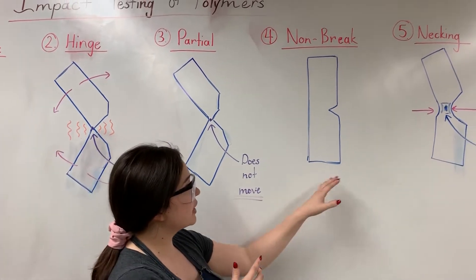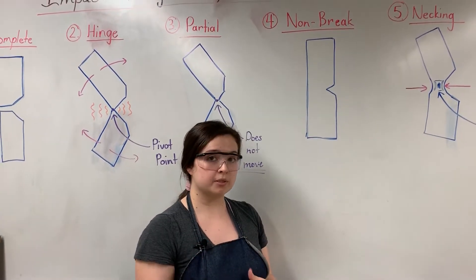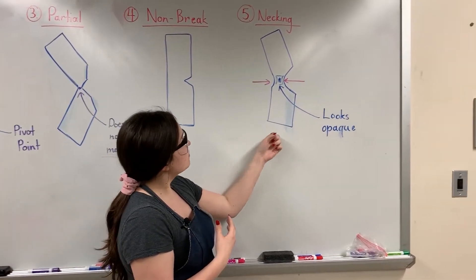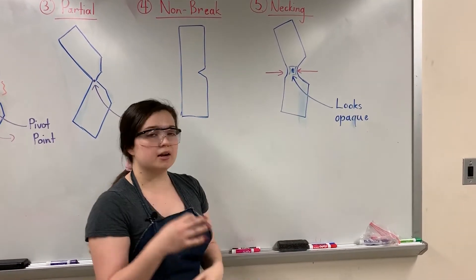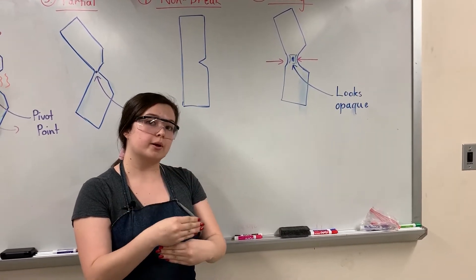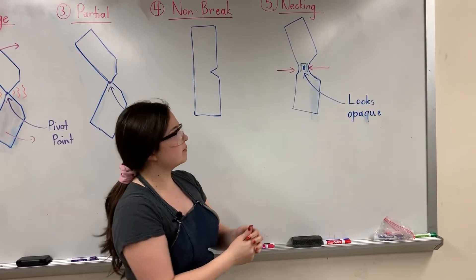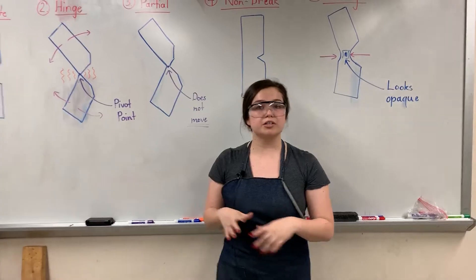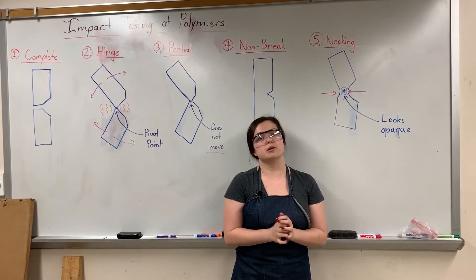We also have a non-break, which is very common in rubbery materials because rubbery materials require a lot more force to fracture. And then we have necking, which is most common in polymers such as polycarbonate. For the rate dependence lab, if you saw the polycarbonate — the blue polymer being stretched — you were able to see it necking, stretching, and elongating. These types of fractures are very important to recognize when you put specimens into the machine.